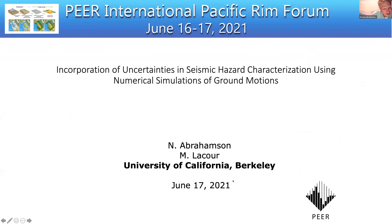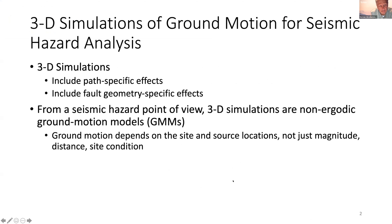This is going to be very different from what's been presented so far. I'm going to give you the perspective of someone running seismic hazard and what we need to actually use numerical simulations in seismic hazard calculations. 3D simulations include path-specific and fault-specific geometry effects, so they're much more idealized to the specific situation. From a seismic hazard point of view, we see these as non-ergodic ground motion models, where the ground motion depends on the site and source location, not just on magnitude, distance, and site condition.